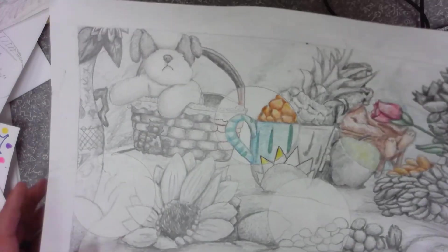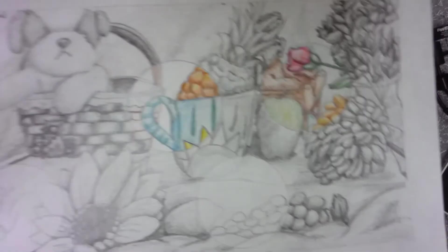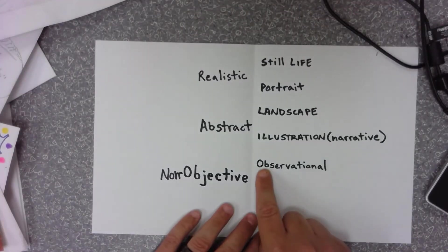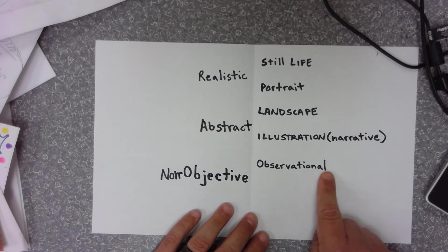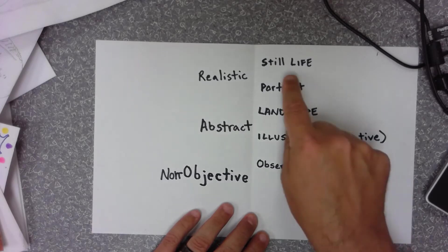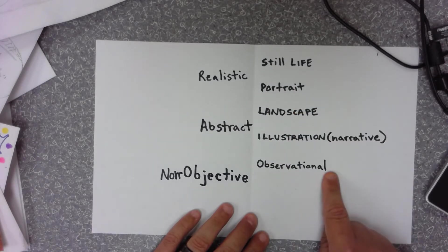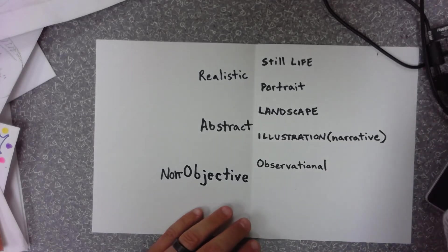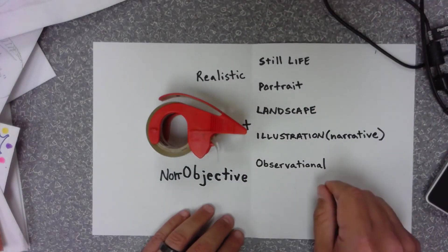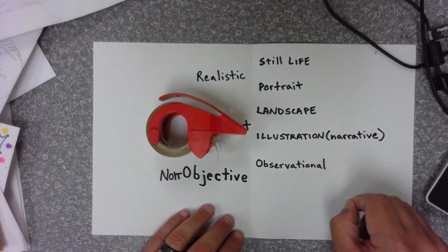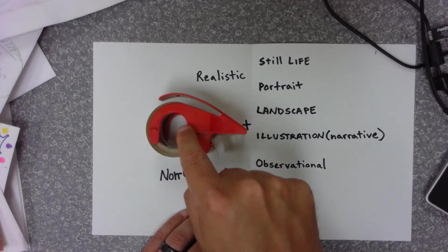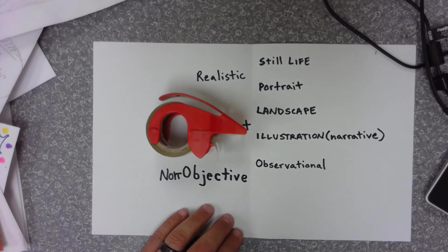A still life doesn't move — it's still — and you look at it, so it's also observational. A still life is observational, but an observational drawing could be drawing just one thing. If I set this roll of tape in front of me and drew it while looking at it, studying all the different lines and curves and trying to match them in my drawing, that would be observational as well.